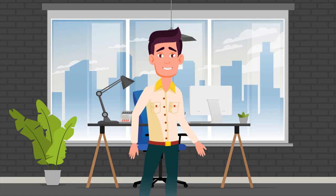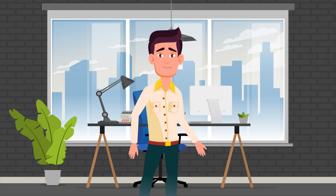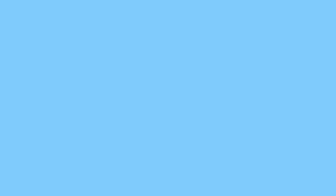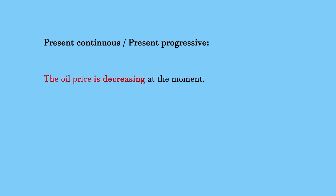Moving on to the present continuous, also known as progressive, which describes actions that are happening around the time of speaking. Here are two examples. The oil price is decreasing at the moment. Currently, the price of gold is rising dramatically.